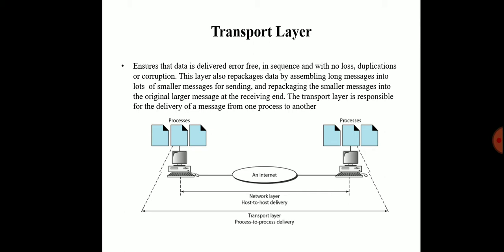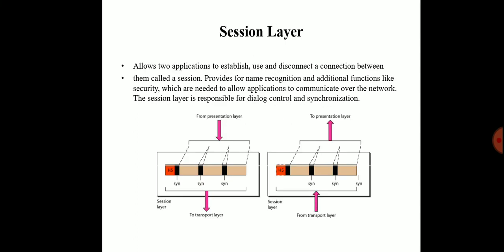The data is delivered error-free, in sequence, and with no losses, duplications, or corruptions. This layer also repackages data by assembling long messages into smaller messages for sending, and repacking the smaller messages into the original longer messages at the receiving end. The transport layer is responsible for delivery of a message from one process to another process. We see the block diagram with two systems: the network layer handles host-to-host delivery, and the transport layer is responsible for delivery of one message from one process to another process.